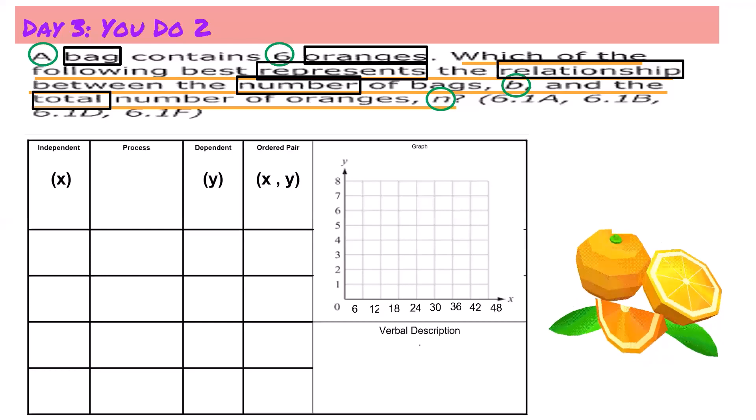Next I need to figure out which one is independent and which one is dependent. So when I look at the number of bags and I look at the total number of oranges, I think in my mind if I had no oranges, would I need any bags? So I am going to say bags depend on oranges.